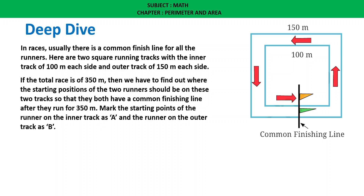So this is the destination point. Mark the starting point of the runner on the inner track as A and the runner on the outer track as B. We need to find where on the outer track point B is, so that each runner covers a total distance of 350 meters and reaches the common finishing line.